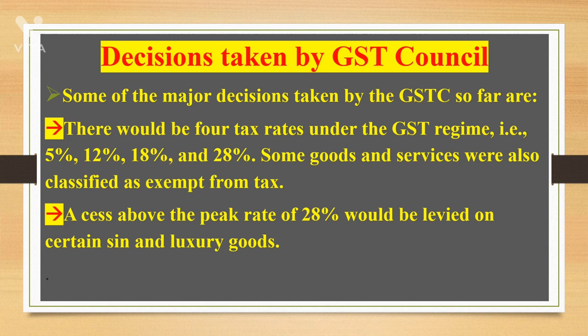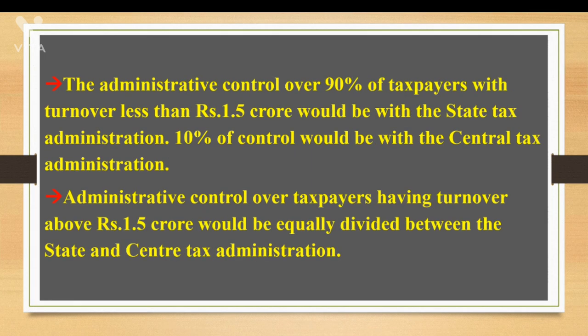Decisions taken by the GST Council. Some of the major decisions taken by GST so far are: there would be four tax rates under the GST regime — 5%, 12%, 18%, and 28%. Some goods and services were also classified as exempt from tax. Cess above the peak rate of 28% would be levied on certain demerit and luxury goods. The administrative control over 90% of taxpayers with turnover less than Rs. 1.5 crore would be with the state tax administration.